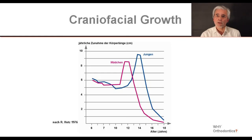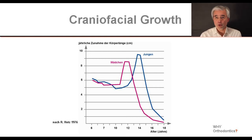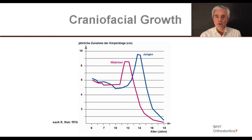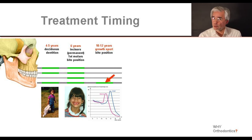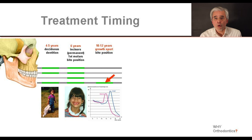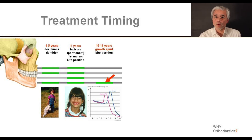An important time period is the growth spurt just before puberty. It occurs a little earlier with girls than with boys, but we should see all children at the age of 10. This mainly concerns the question of whether the lower jaw is growing properly or if it is too short. This can be corrected by taking advantage of the growth spurt. Therefore I have marked the timeline for the lower jaw in green color here.